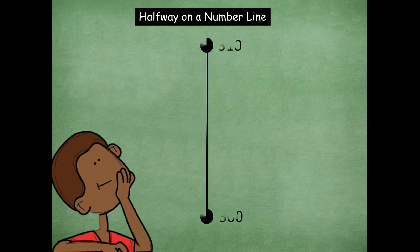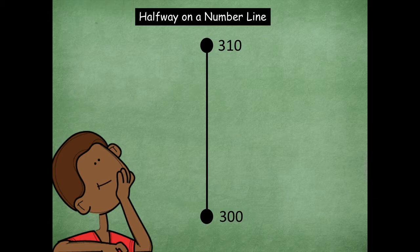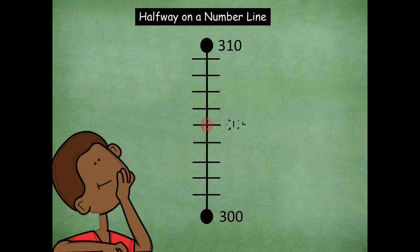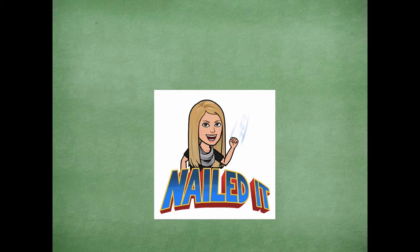All right. Let's look at another one. All right. Here's our last one. You ready friends? Okay. 300 and 310. What is the halfway or midpoint between those two numbers? Let's go all the way up. Four on the top, four on the bottom. Find that middle one. And it is 305. Awesome job with that friends. Nailed it.